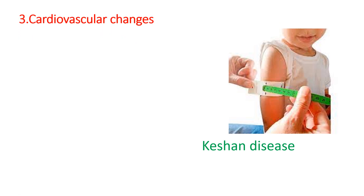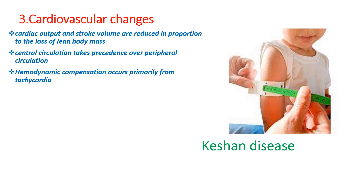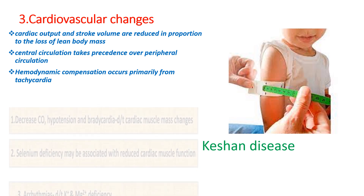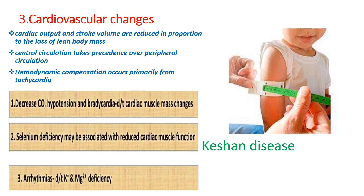When we see the cardiovascular changes in malnutrition, cardiac output and stroke volume are reduced in proportion to the loss of lean body mass. In malnutrition, central circulation takes precedence over peripheral circulation, and hemodynamic compensation occurs primarily from tachycardia. During malnutrition, there is decreased cardiac output, hypotension, and bradycardia due to cardiac muscle mass changes. The cardiac muscle mass is decreased in proportion with lean body mass. Also, Keshan disease or selenium deficiency cardiomyopathy can occur, putting them at risk of heart failure.